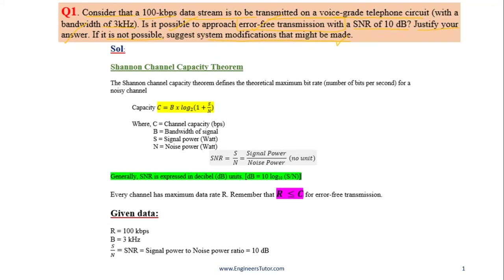This question is based on Shannon channel capacity theorem, which is given by C = B·log₂(1 + S/N), where C is the channel capacity, B is the bandwidth of the channel, S is the signal power in watts, and N is the noise power in watts. Channel capacity C means the maximum data rate that we can transmit over a given channel — which may be coaxial cable, twisted wire, radio, satellite, or fiber.